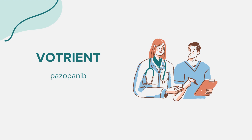Votrient, or pazopanib, belongs to the drug class of VEGF/VEGFR inhibitors. It is a cancer medication designed to interfere with the growth and spread of cancer cells within the body. Votrient is primarily used to treat advanced renal cell carcinoma, which is a form of kidney cancer.